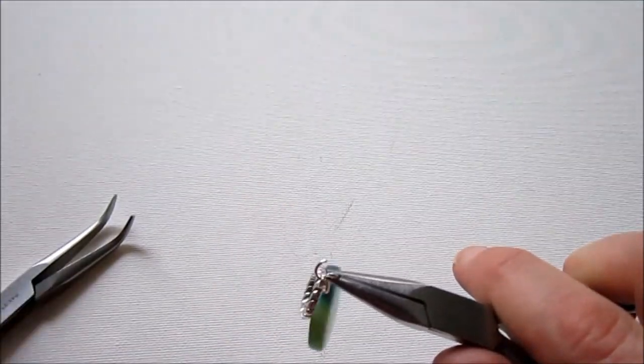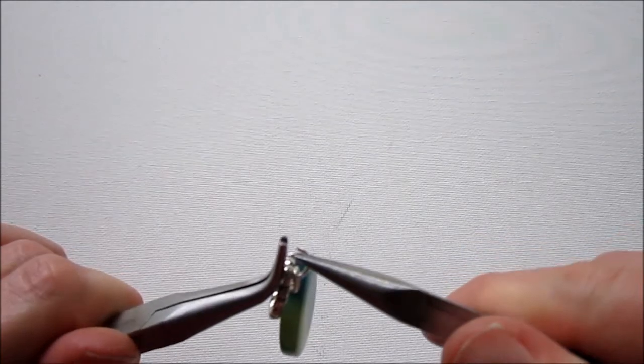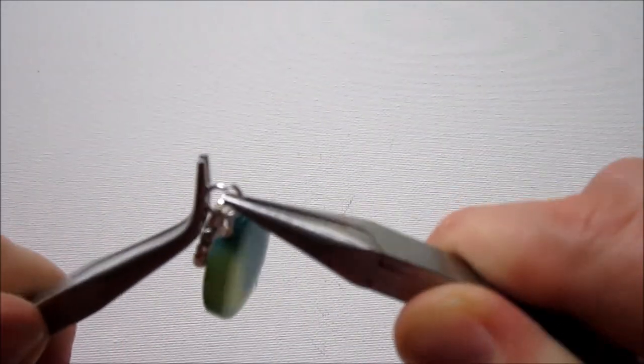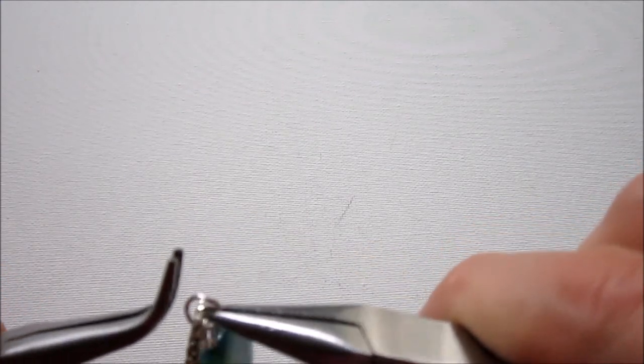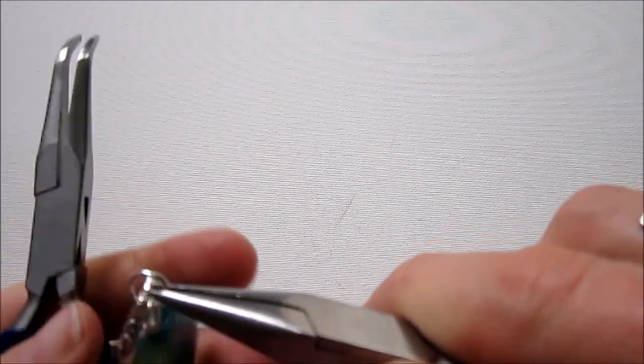And then close the jump ring. So, to close it, you just do the opposite of opening it. But just go past the point of closing a few times. That will just harden up the jump ring. And then you'll hear it or feel it click into place.